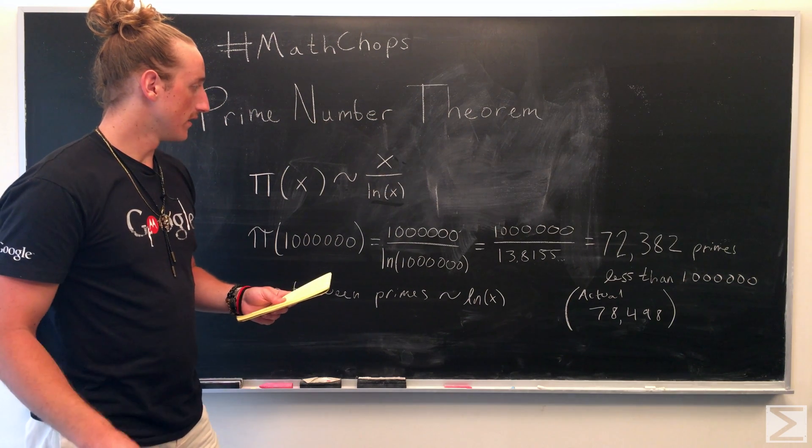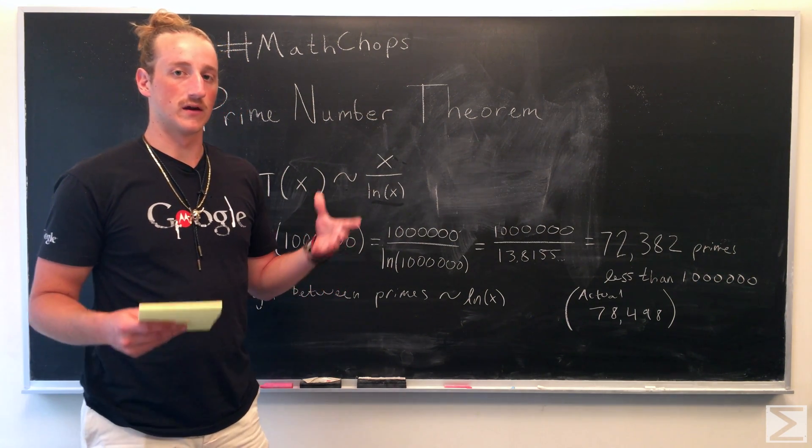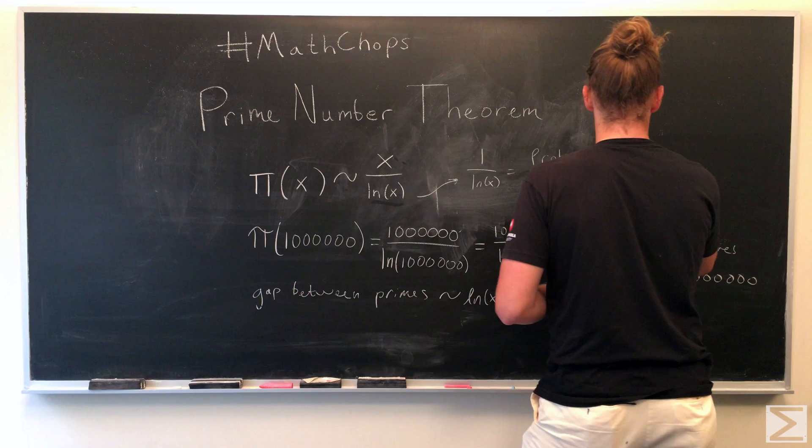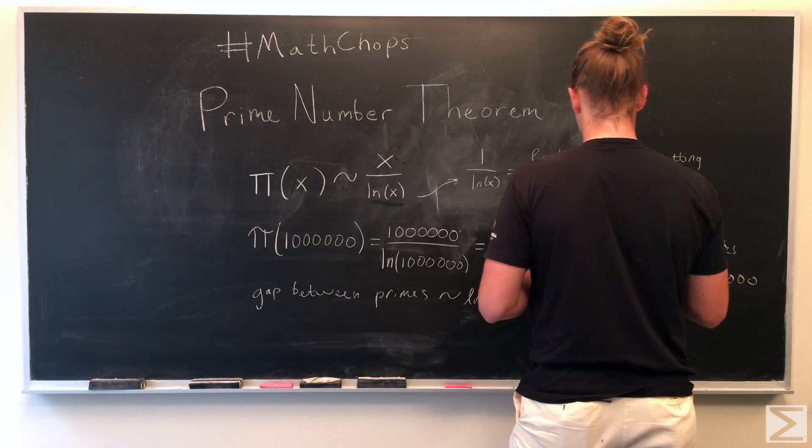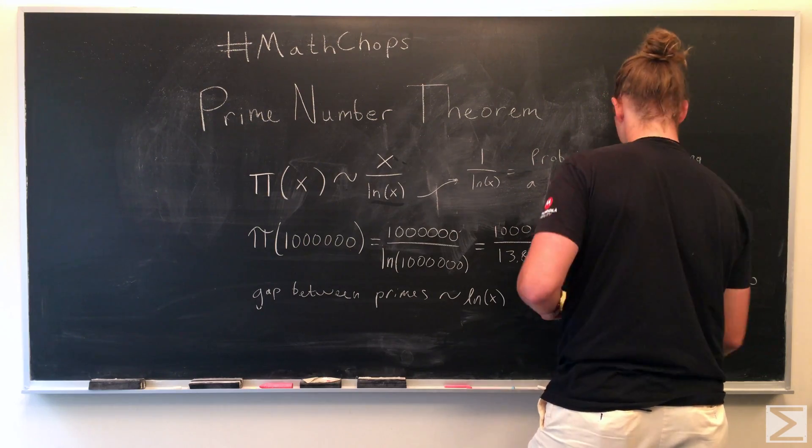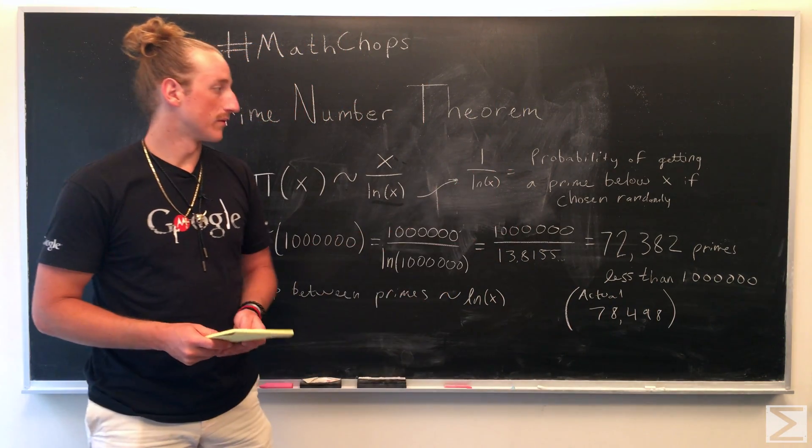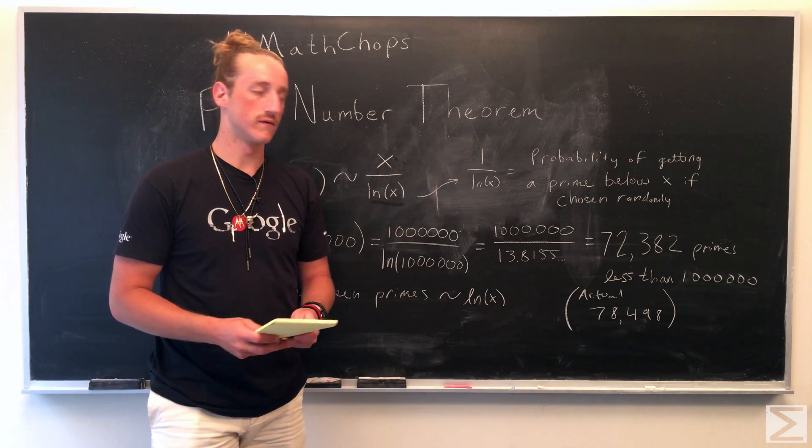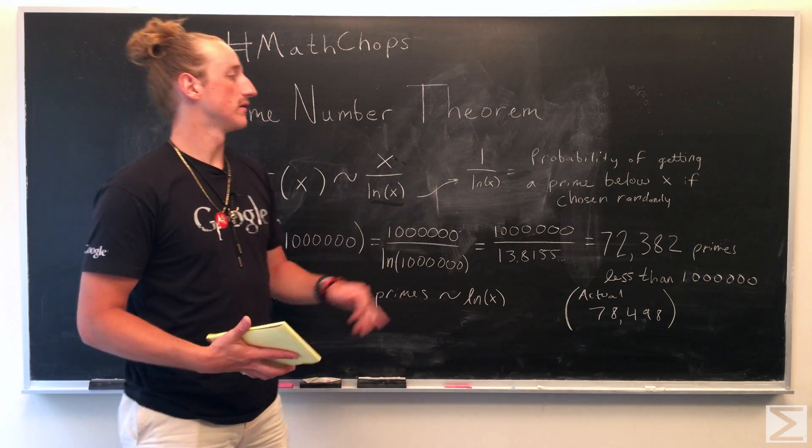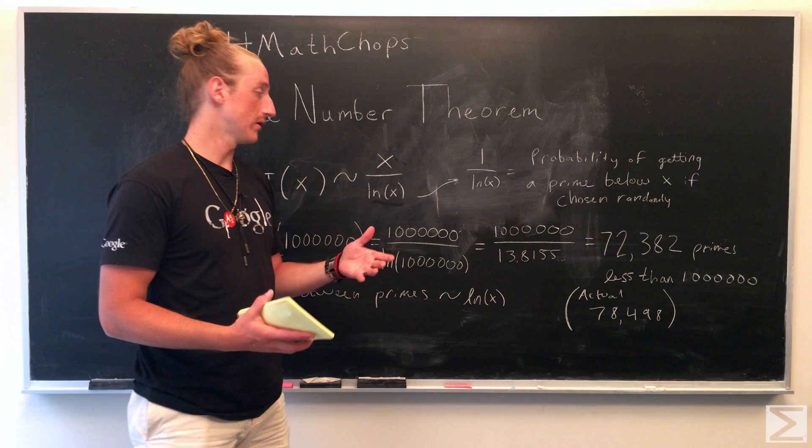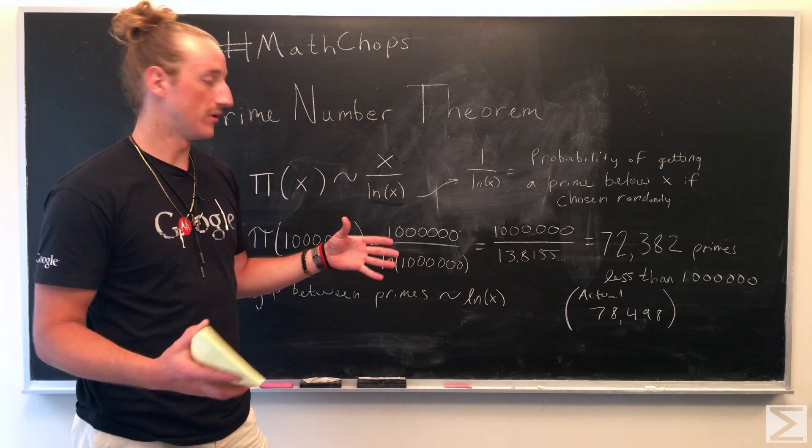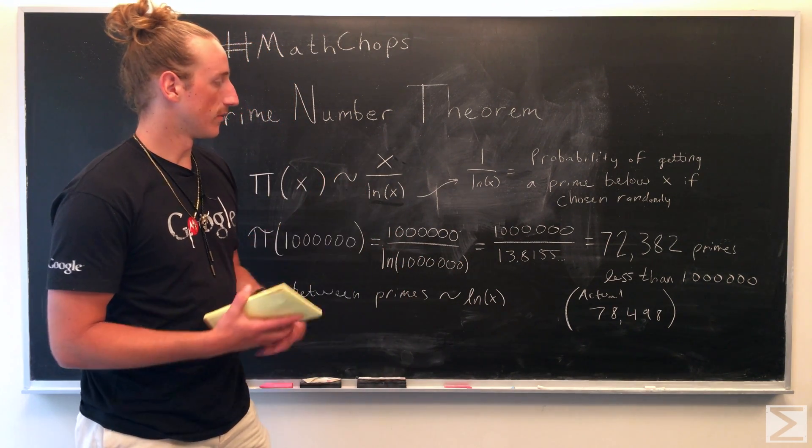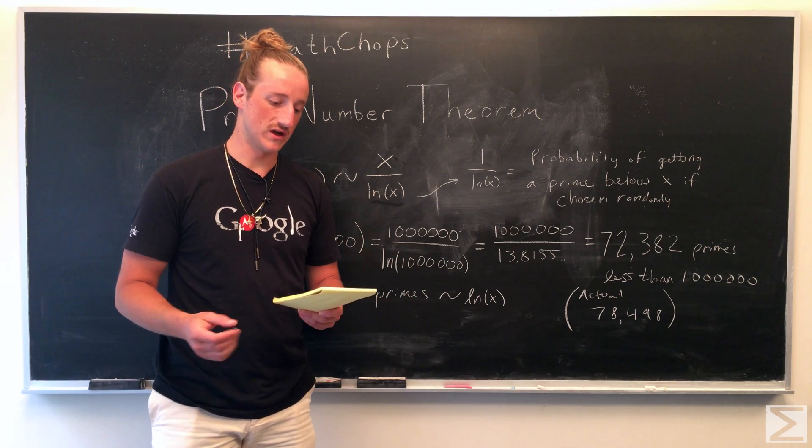Also, we can look at, given a number, what's the probability of getting a prime below that? So the probability for a given x, if you choose a number randomly, is going to be this ratio, which is 1 over the natural log of x. So for a million, the probability of getting a prime below a million, once you choose any number below a million randomly, it's going to be 1 over 13.8155. So about one 14th percent chance of getting a prime.